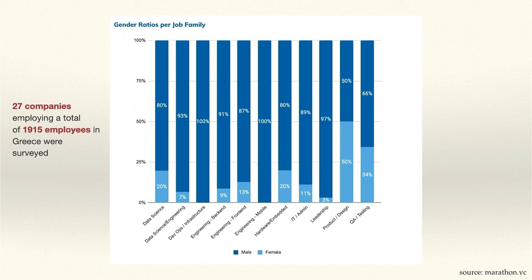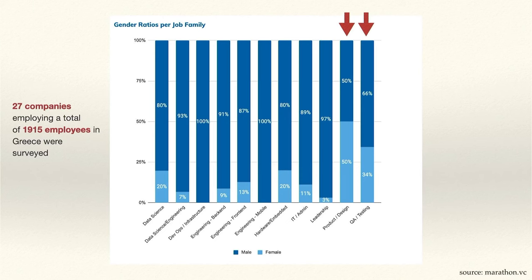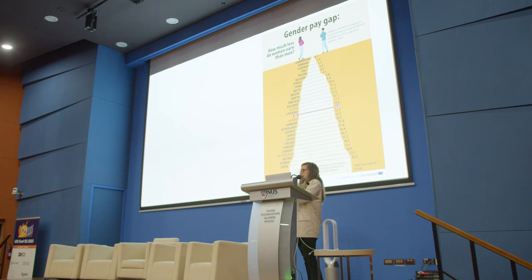This graph is published by Marathon VC, a Greek-based venture capital, showing gender ratios per job family. They questioned 27 companies employing a total of 1,915 employees in Greece. In some job families, like product, design, and QA and testing, women's representation is around 50%. Whereas in others, like DevOps infrastructure and engineering mobile, women's representation is 0%. And what I also want to highlight is that we don't only have a gender gap — we also have a gender pay gap.